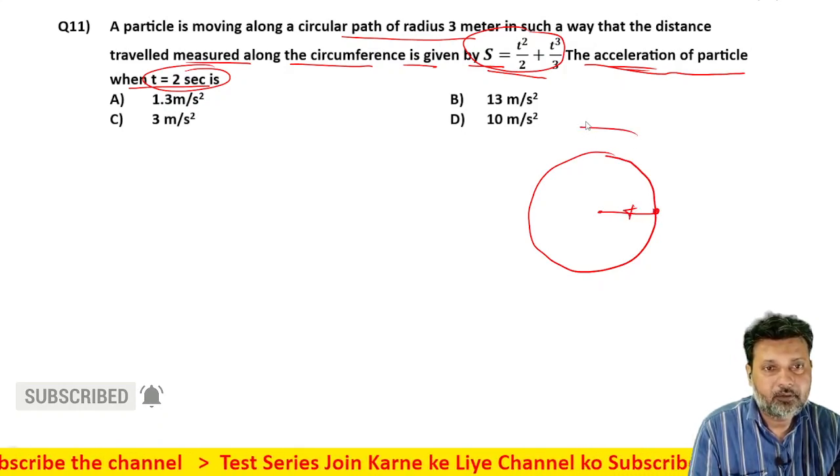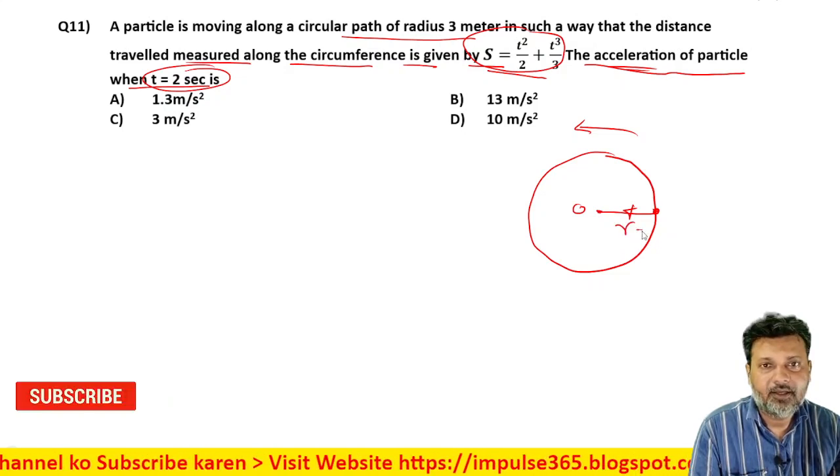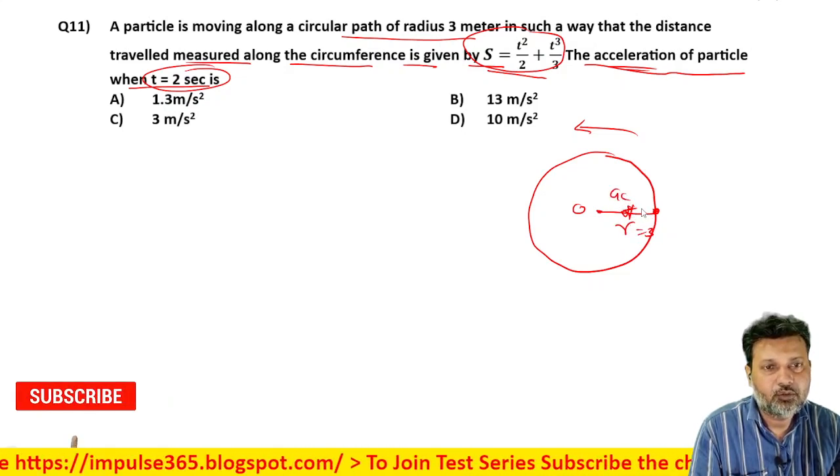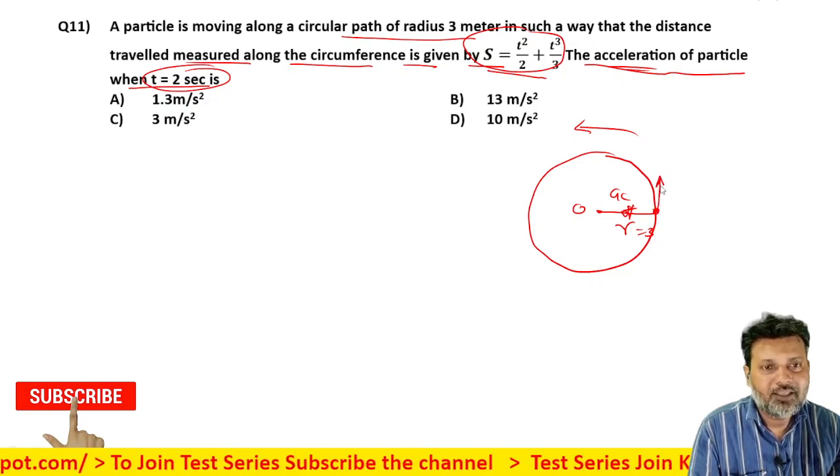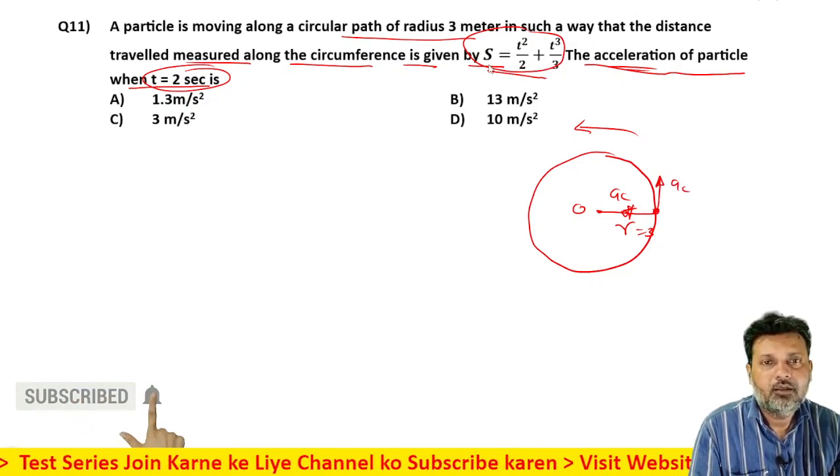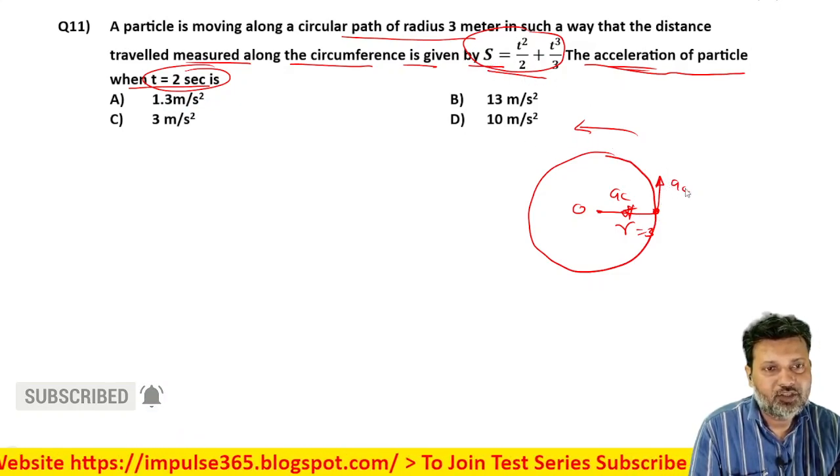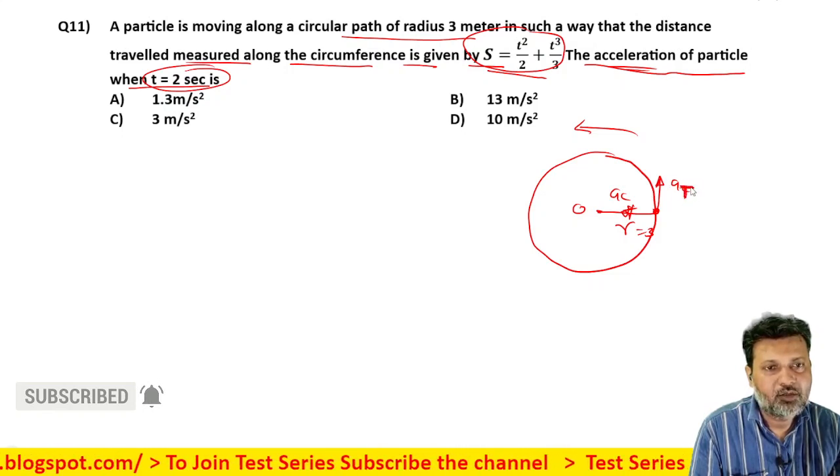And if a particle is rotating anticlockwise like this, this is its center, this is radius r, whose value is 3 meters. So centripetal acceleration will be towards the center, and tangential acceleration will be in the direction of motion. Because distance is increasing with time, if speed and motion is in this direction, then tangential acceleration's direction will also be the same.